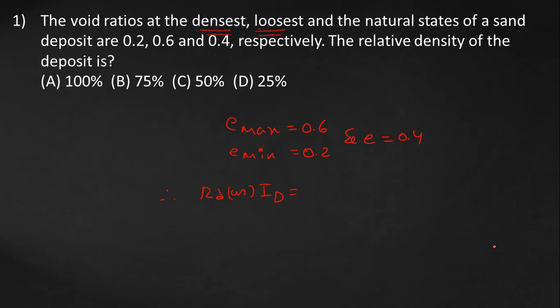Therefore Rd or Id—so relative density is also called density index—that equals emax minus e by emax minus emin, which equals 0.6 minus 0.4 by 0.6 minus 0.2. It will be approximately 0.5. In percentage it is 50 percent. So answer C.